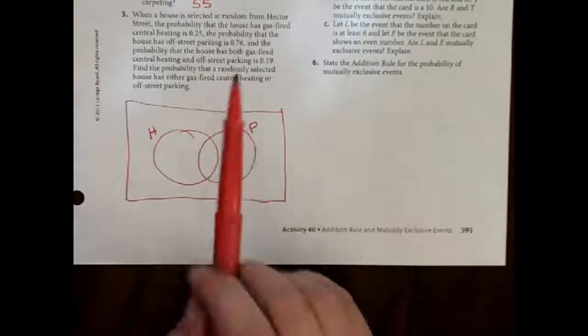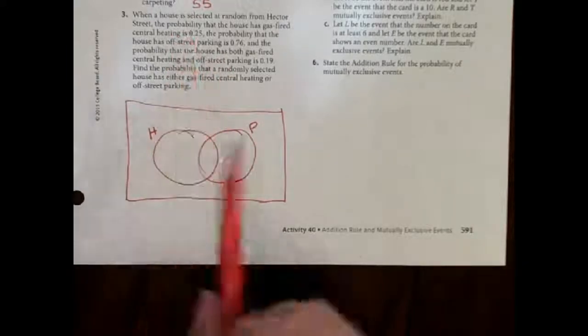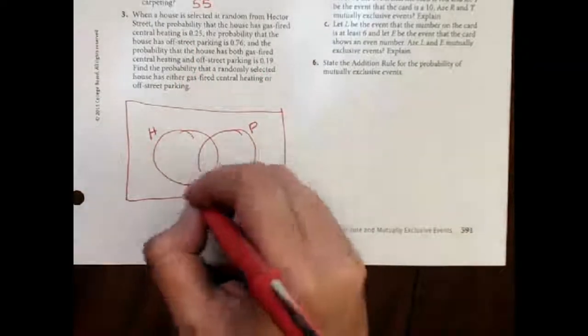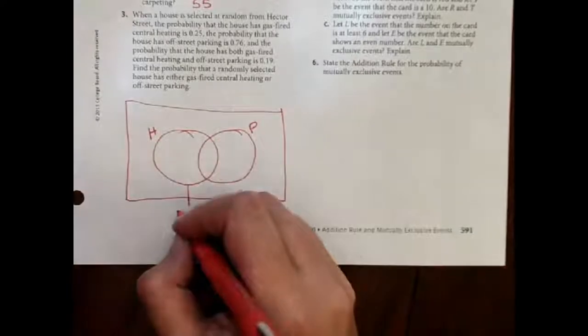It says, first of all, we have central heating, and I just said H for heating. The chance that it has central heating is 0.25. Now, that's the whole circle. It doesn't go on here. That's the whole circle, 0.25.